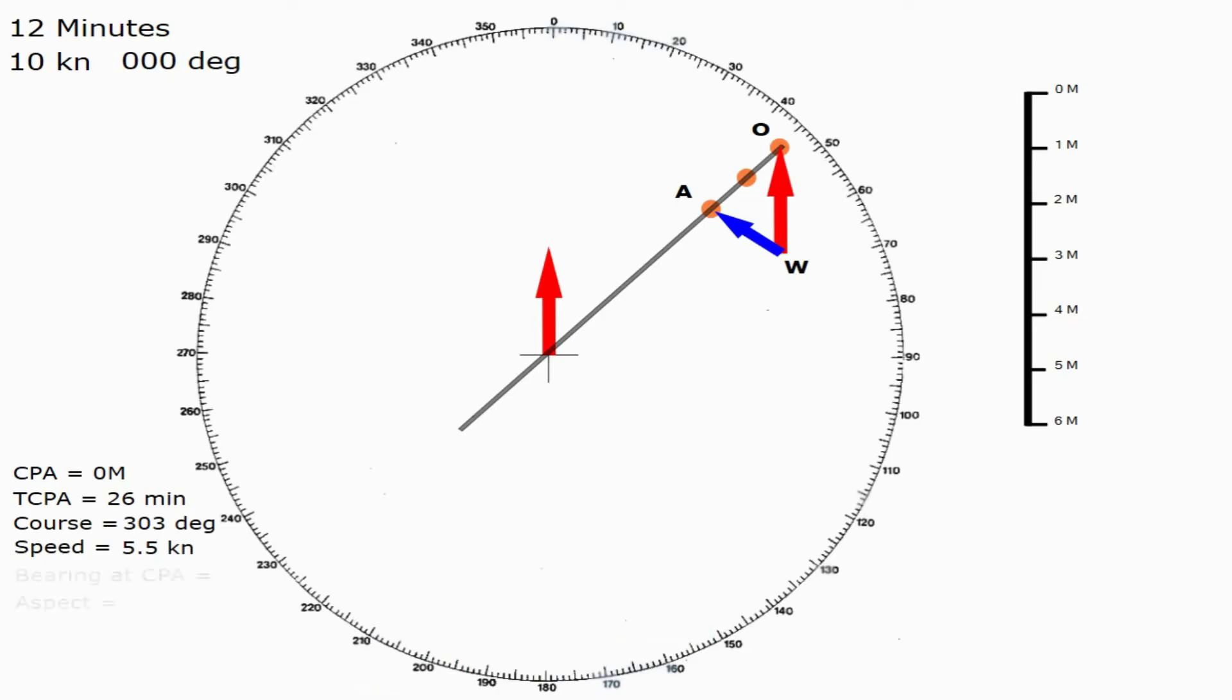The next things we want to find are the bearing at the closest point of approach and the aspect. Now, in this particular example, where the closest point of approach is 0, there is no bearing. So, that one is actually irrelevant. If the closest point of approach was, say, a mile, then we'd want the bearing to where the vessel would be when there were 1 mile offers. We will cover that when we look at a more advanced plot.